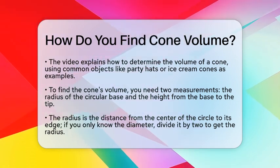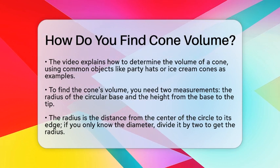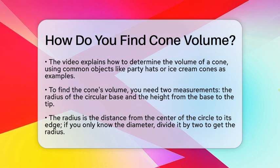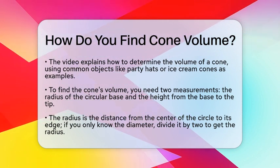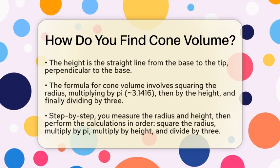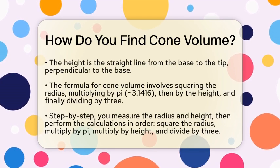The formula for cone volume is quite simple once you get the hang of it. You take the radius, square it, and multiply by pi, which is approximately 3.1416. Then multiply that by the height. After that, you multiply the whole thing by 1 third.